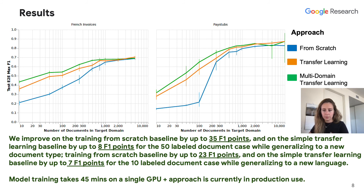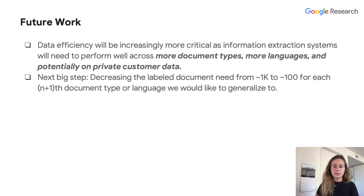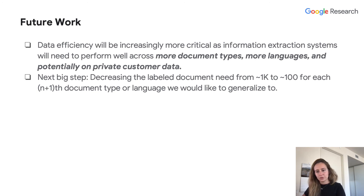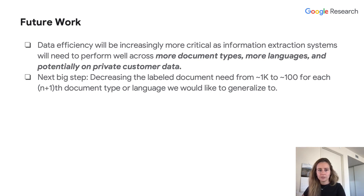Our proposed multi-domain transfer learning approach is currently in production use. Data efficiency will be immensely critical, as information extraction systems in production will increasingly need to perform well across more document types, more languages, and potentially on private customer data, ideally without sacrificing generalization ability and training and inference time. We believe the next big step will be to decrease the labeled document need from thousands to hundreds for each new document type or language we would like to generalize to.